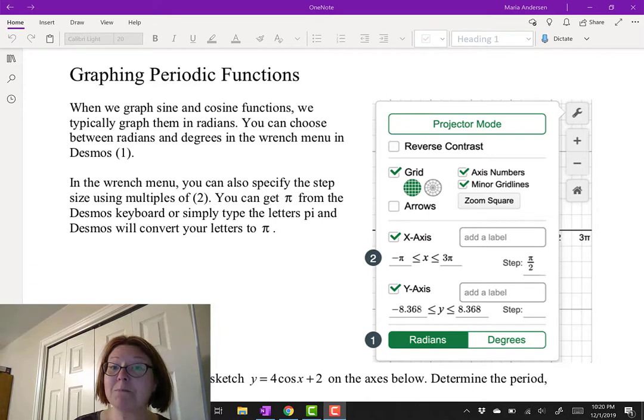You can specify that with multiples of pi. You can use pi from the Desmos keyboard or you can simply type the letters pi if you're on a laptop and Desmos will convert those letters to pi.